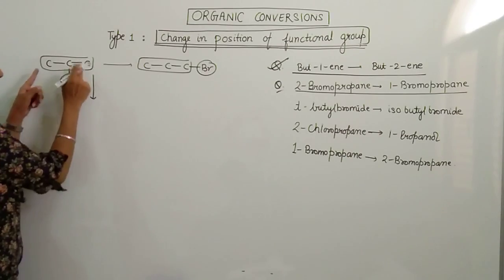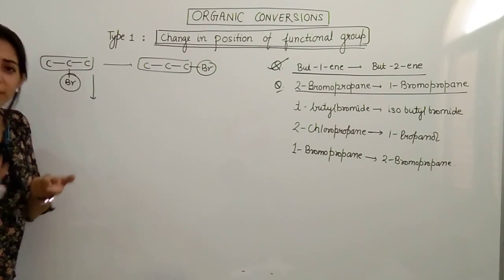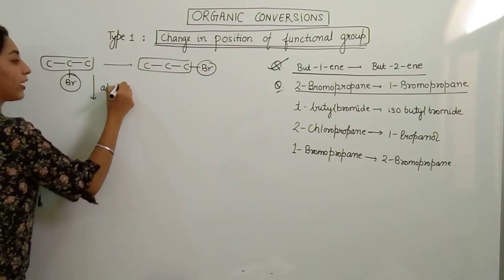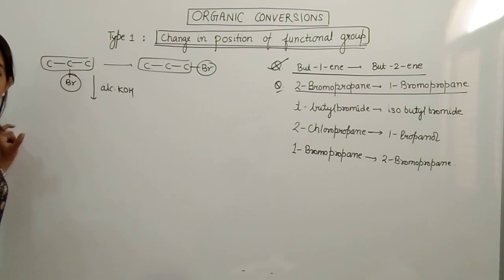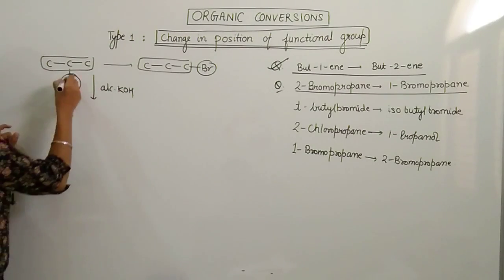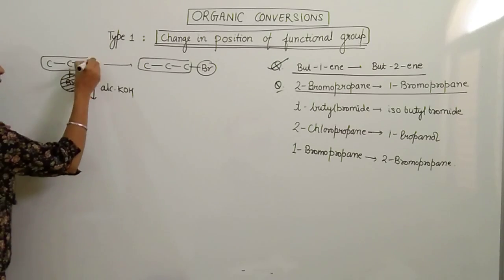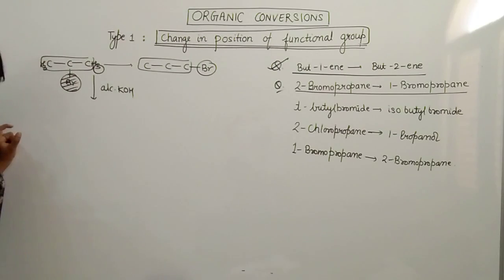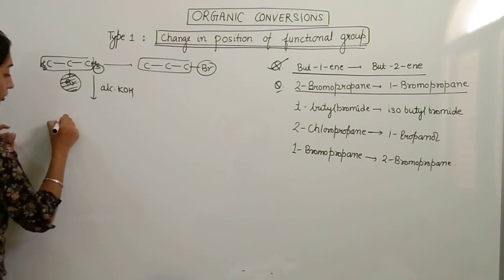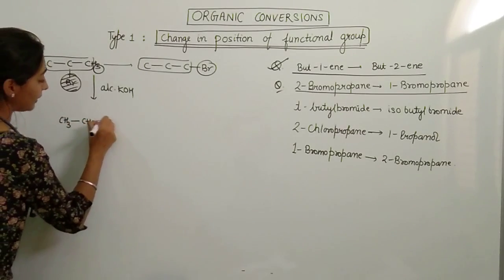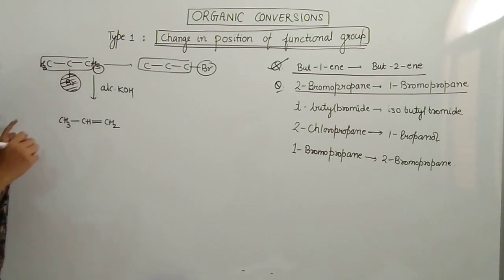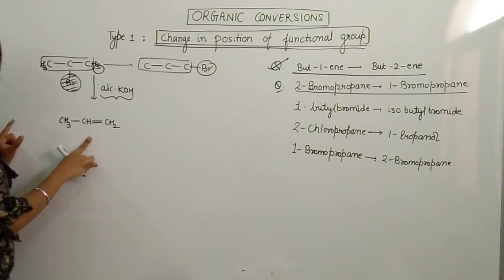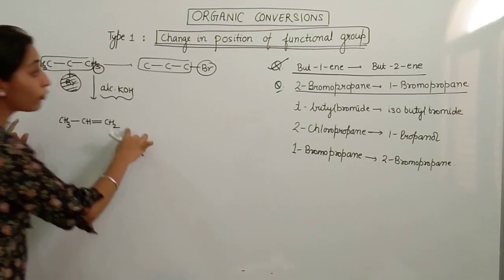First, you have to remove the functional group. So how should I remove the functional group? I do just elimination reaction. I have to create a double bond. And for elimination I told you, you have to put alcoholic KOH. When you put alcoholic KOH, Br goes from this carbon and one H goes from this carbon. It leads to the formation of CH3-CH=CH2. See, we just used alcoholic KOH and we got alkene.